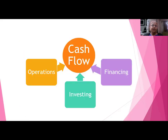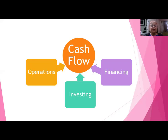Cash flow from operations, investing, and financing: operations are nothing but whatever things we have considered while preparing our profit and loss account — most things will come from there. A part of operational cash flow will also come from your balance sheet. Financing activities are purely a balance sheet extract, and investing activities are also part of balance sheet items.